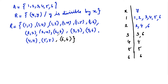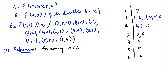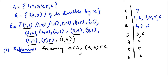These are all the possible ordered pairs. Now let us check for reflexive. The condition for reflexive is: for every a belonging to set A, (a, a) must belong to R. We can observe that for every element in A — that is 1, 2, 3, 4, 5, 6 — the pairs (1,1), (2,2), (3,3), (4,4), (5,5), and (6,6) all exist. So R is reflexive.